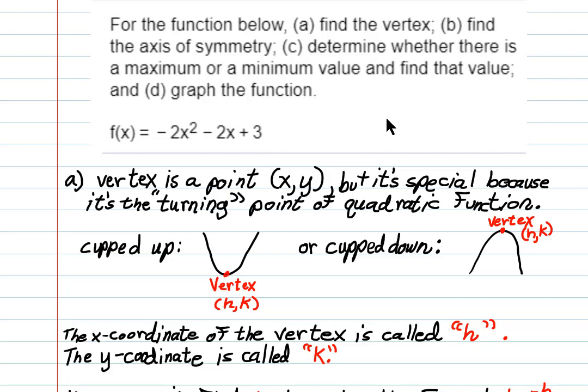The vertex is a point like any other point—it has an x-coordinate and a y-coordinate—but it's special because it's the turning point of the quadratic function. Here's a cupped up parabola where the vertex is at the point where the parabola changes from going down to going up, from decreasing to increasing. Here's a cupped down parabola where the vertex is at the point where the parabola changes from going up (increasing) to going down (decreasing).